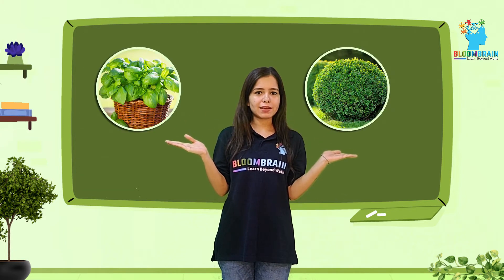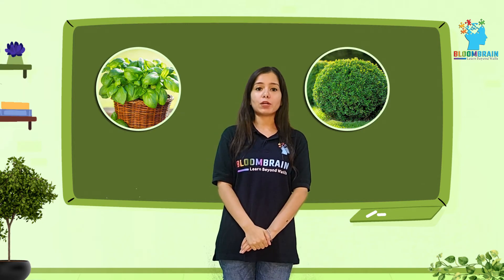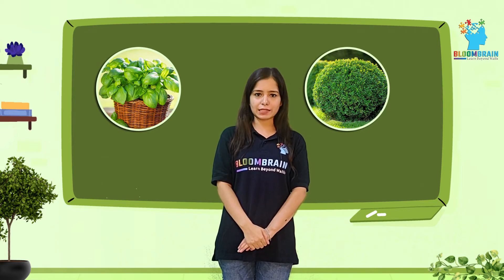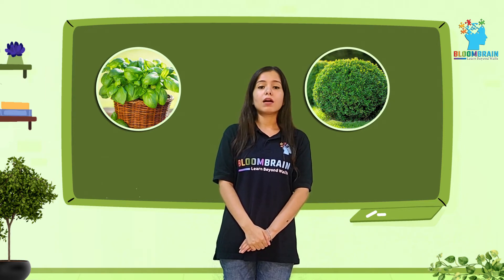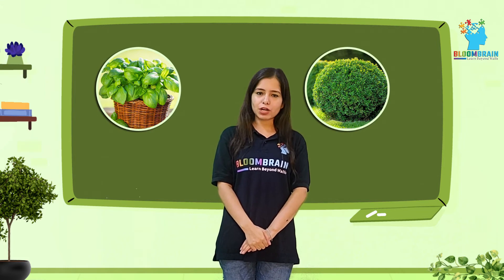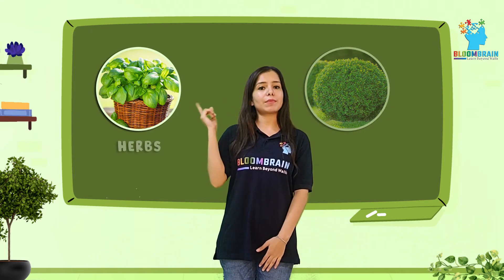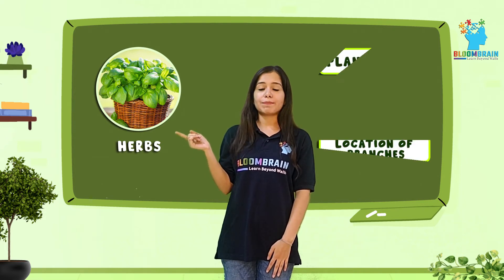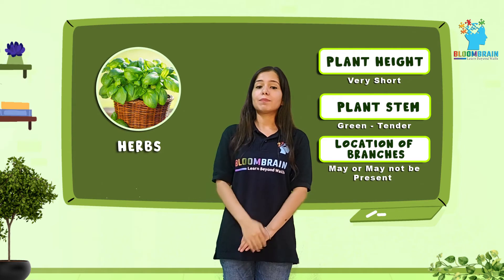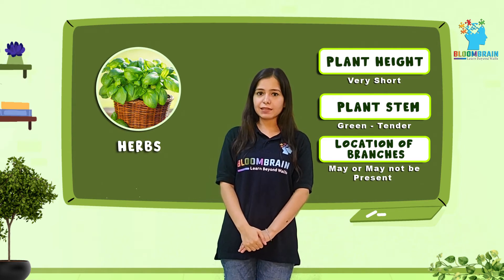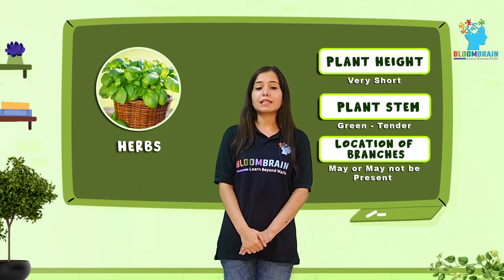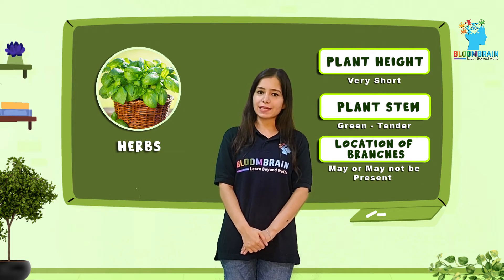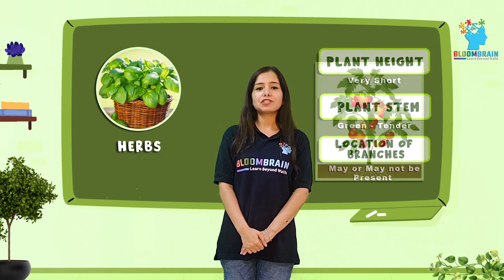Can you recognize these two pictures? Once we study them in detail, you will surely be able to recognize which one is herb and which one is shrub. In the case of herbs, the plant height is very short. The plant stem is green and tender, and the branches may or may not be present. Example: tomato plant.